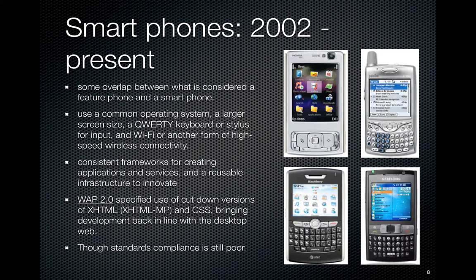There was still poor standards compliance — different phones supported different parts of different specifications without much collaboration. While more features and a bit more user-friendly, these still weren't devices that people would use for frequent daily tasks. If you wanted to check your email, you'd think: yes I could, but it's going to take so long I'll probably just wait until I get home. Nice to have if you needed it, but you probably still weren't going to use it very frequently.